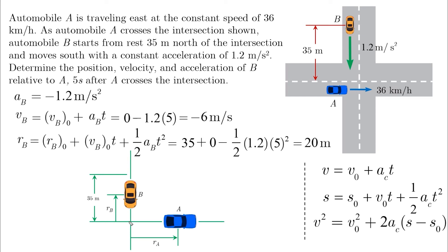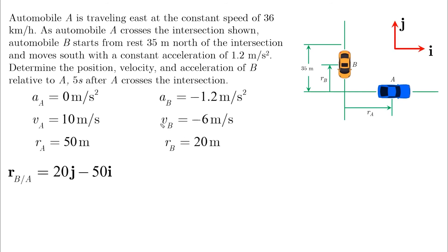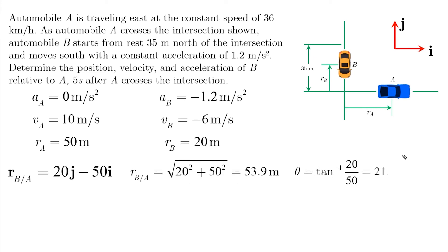Now that we have all variables after 5 seconds, we can find RB relative to A: RB is 20 meters in the positive J direction, minus RA which is 50 meters in the I direction. This gives the magnitude and direction. Note the direction is the inverse tangent of Y over X — with a negative I and positive J component, this determines our angle.